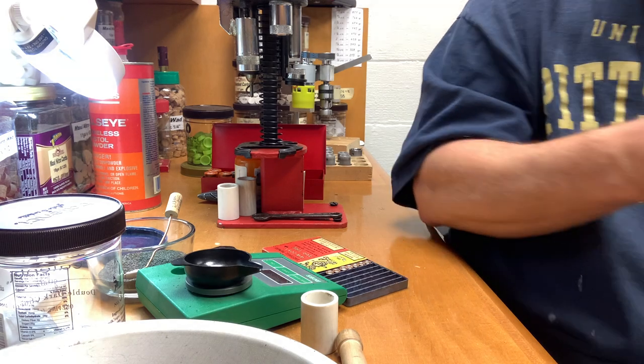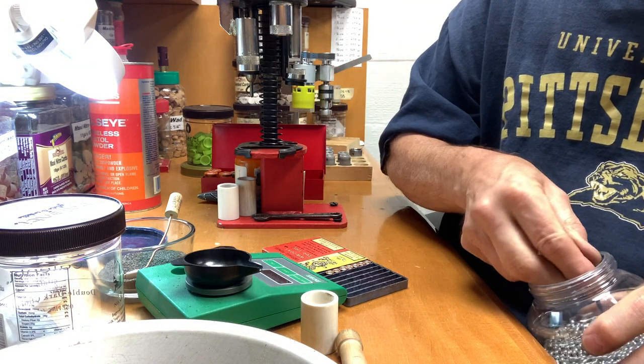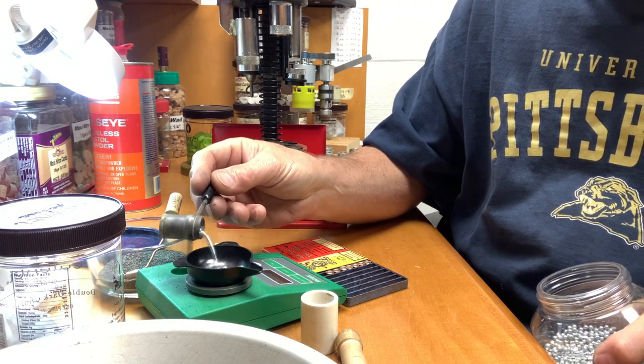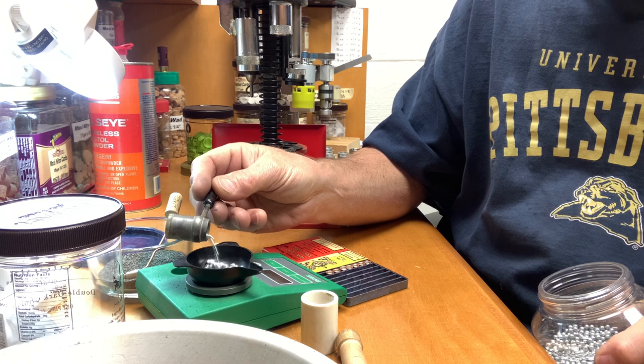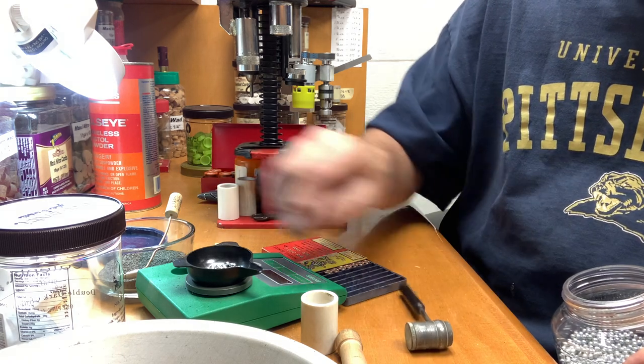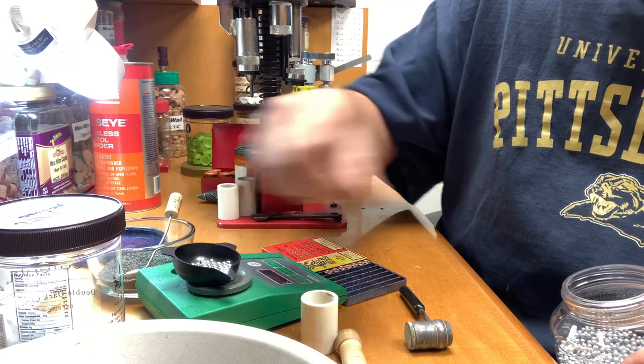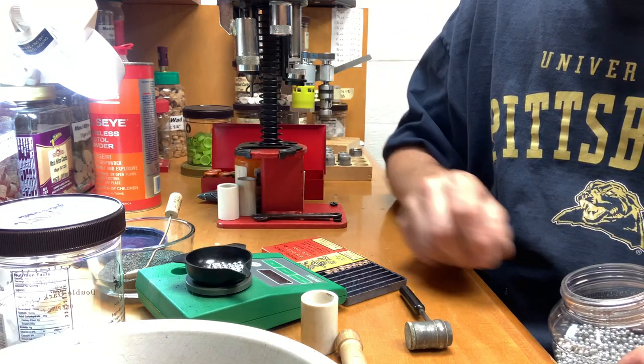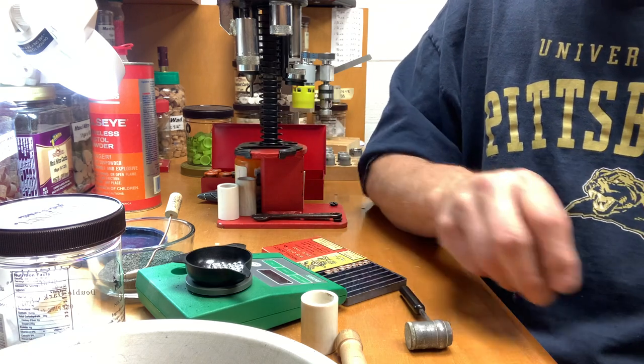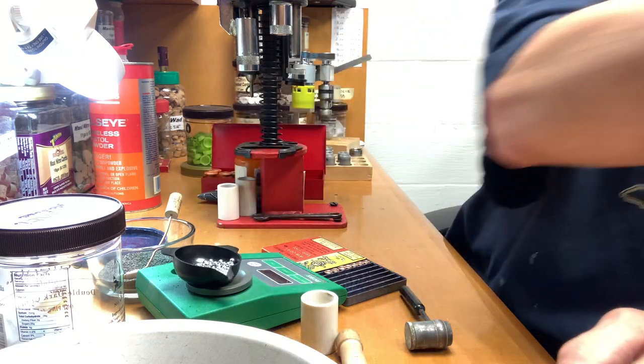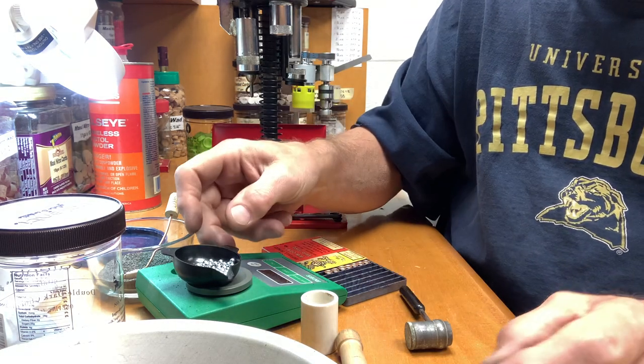245 to 250 grains of BBs. That's a little too much. There, that's 248. We like it, let's take one out. 245.